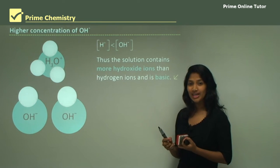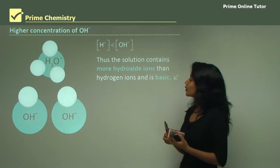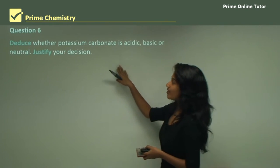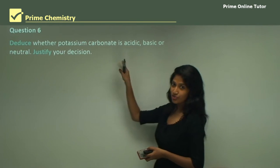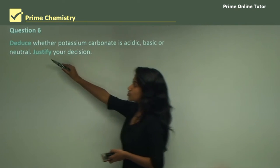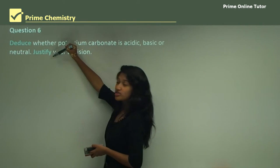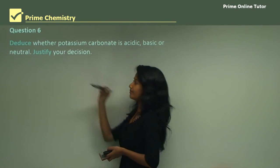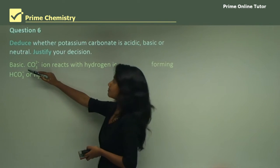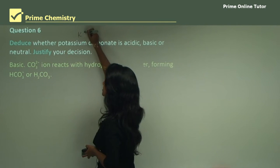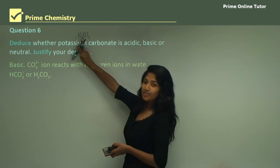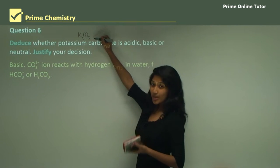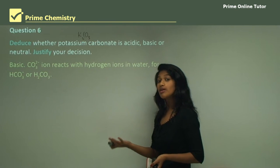Reviewing what we've learned about acidic and basic salts, let's look at Question 6: deduce whether potassium carbonate is acidic, basic, or neutral and justify your decision. First, potassium comes from potassium hydroxide — a strong base. Carbonate comes from carbonic acid — a weak acid. Strong base plus weak acid gives a basic salt, so potassium carbonate is basic.